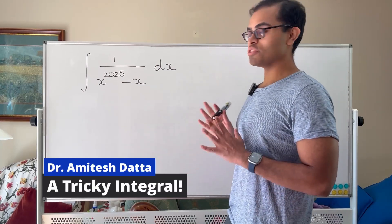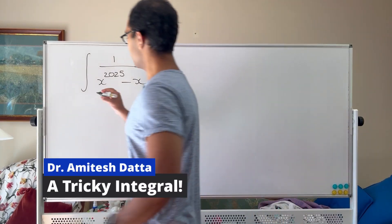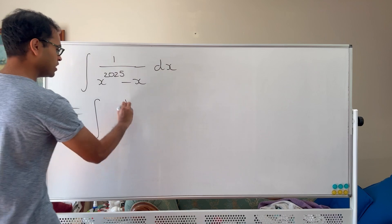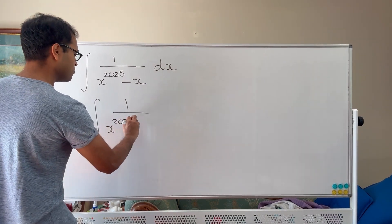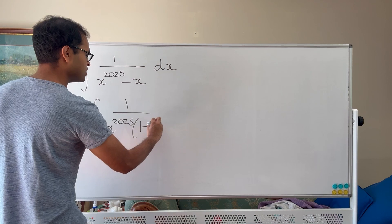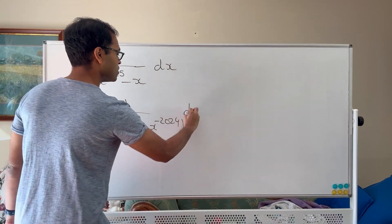The integral of 1 over x to the 2025 minus x dx is going to equal to the integral, let's factor out x to the 2025 from the bottom, so we get x to the 2025 times 1 minus x to the negative 2024, using exponent laws.